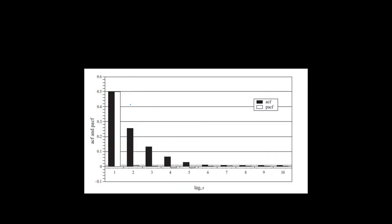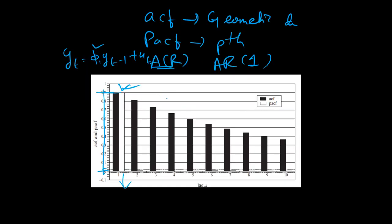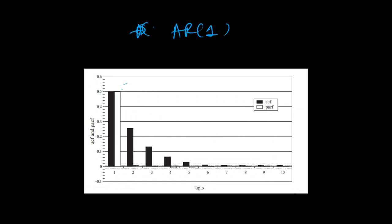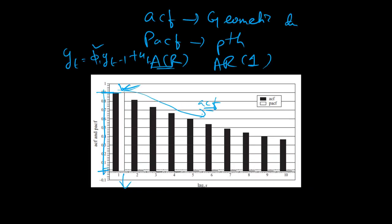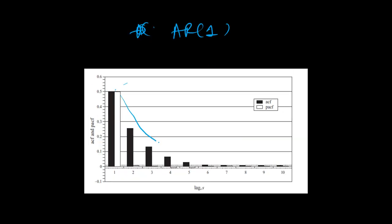The next plot is similar to the previous one — the white bar (PACF) is positive and significant for the first lag, and the black bar (ACF) is decaying. It's an AR(1) process again. But how is it different? Comparing the two graphs, the slope of the ACF decay in the previous plot is quite flat, whereas here it is much steeper. The rate of decay is higher in this case.